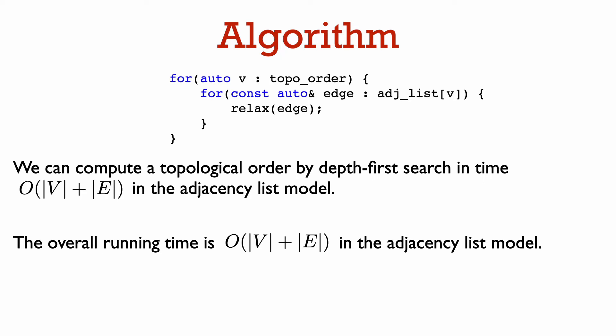Once we have a topological sort of the vertices, we just iterate over the vertices in the topological sorted order. To process a vertex, we relax all its outgoing edges.